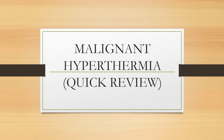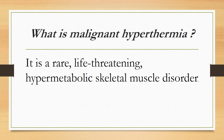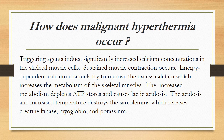Malignant hyperthermia quick review. What is malignant hyperthermia? It is a rare, life-threatening hypermetabolic skeletal muscle disorder. Triggering agents induce significantly increased calcium concentrations in the skeletal muscle cells, causing sustained muscle contraction. Energy-dependent calcium channels try to remove the excess calcium, which increases skeletal muscle metabolism, depleting ATP stores, causing lactic acidosis, destroying the sarcolemma, and releasing creatine kinase, myoglobin, and potassium.